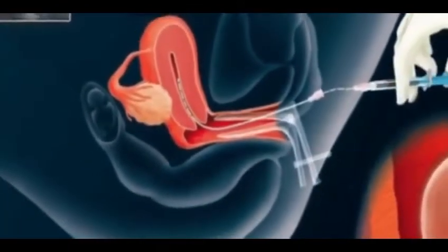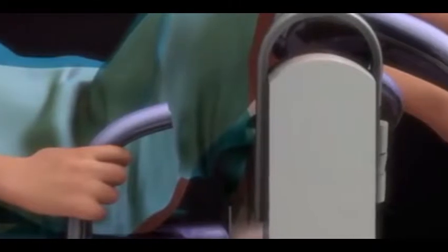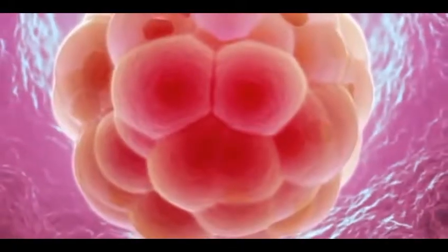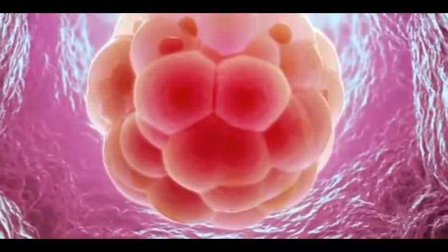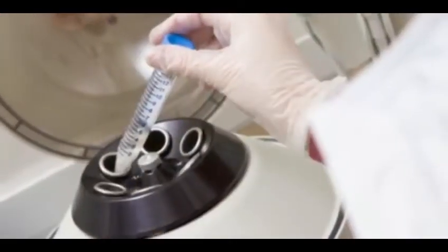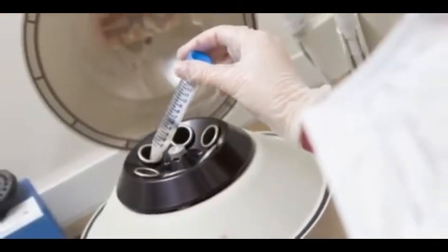Embryo transfer: here, the fertilized eggs are transferred to the uterus. Hormone therapy is done to help embryos get implanted. Some embryos are transferred right away, and some are frozen for future use.